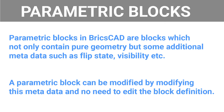Parametric blocks in BricsCAD are blocks which not only contain pure geometry but some additional metadata such as flip state, visibility, etc. A parametric block can be modified by modifying this metadata with no need to edit the block definition. I'll demonstrate this concept with an example.